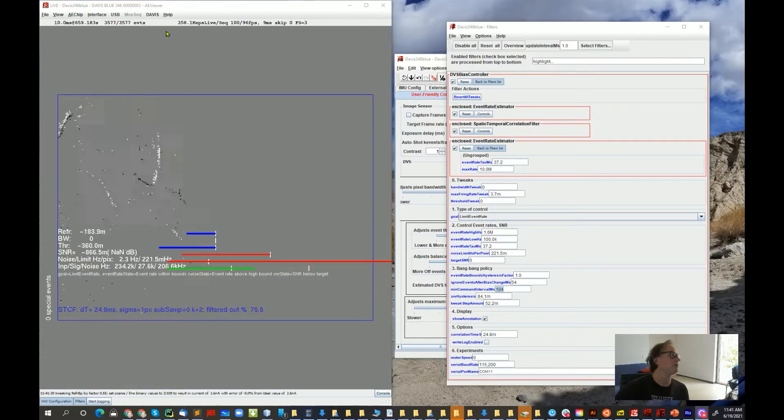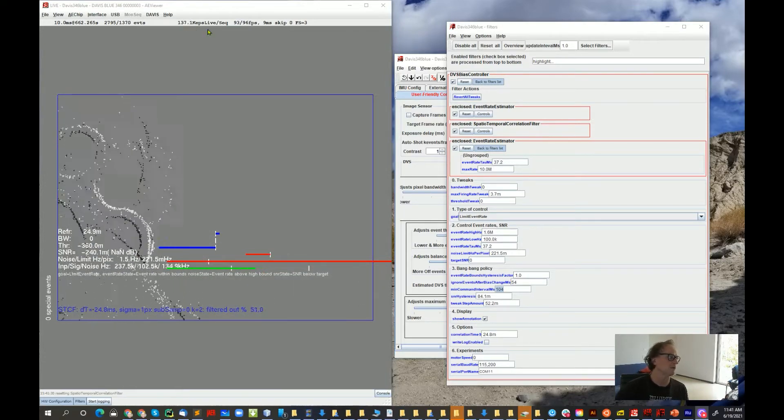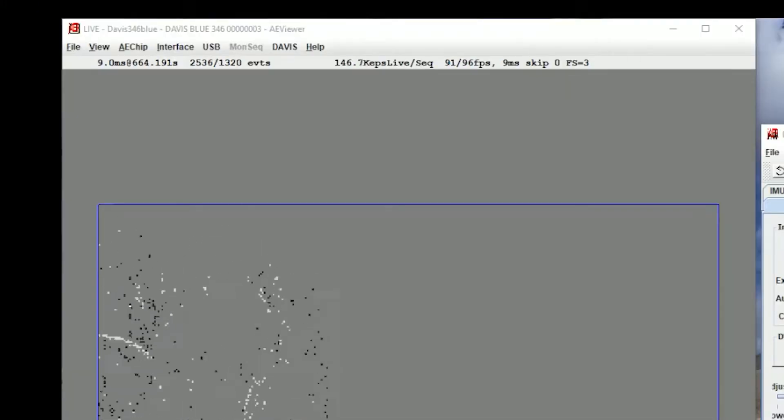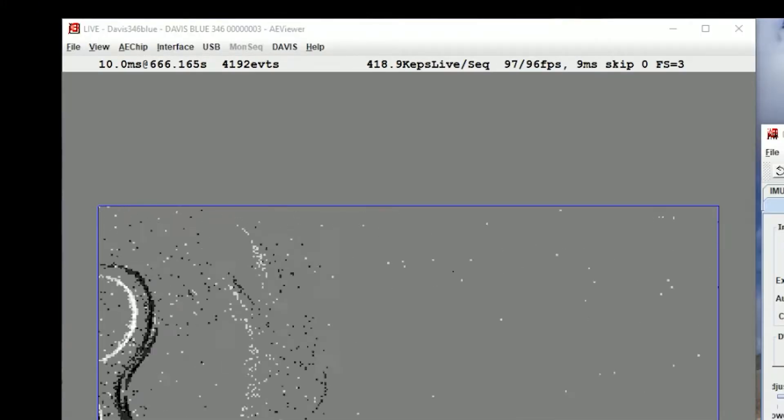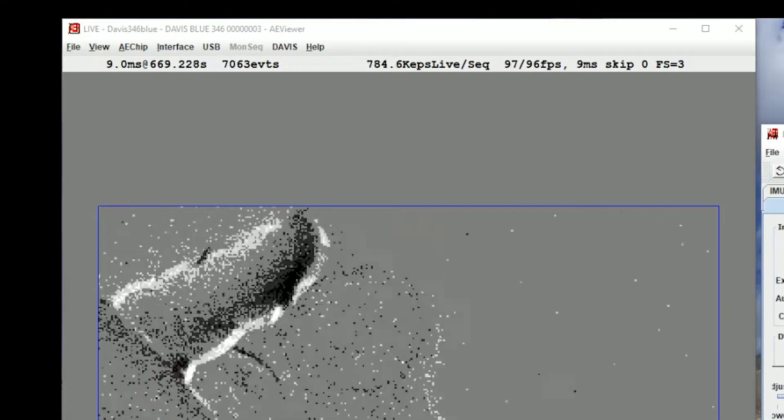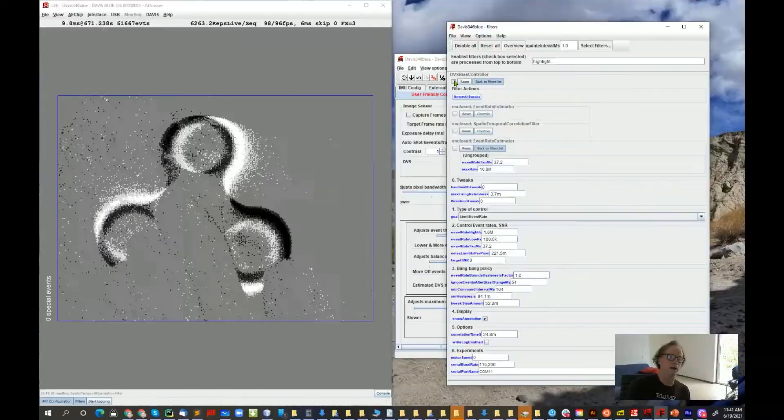I can spin it to create a high event rate. You can read the event rate up here in events in thousands or millions of events per second. If I turn off the DVS bias controller and spin this fidget, you can see it goes up to about 8 million events per second, quite a high rate.